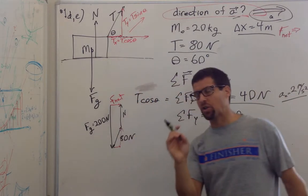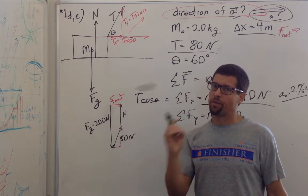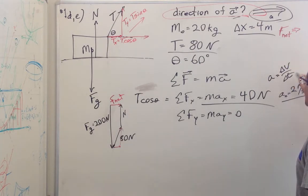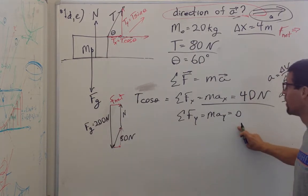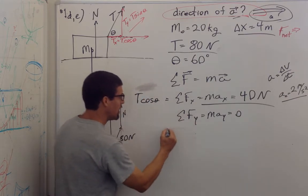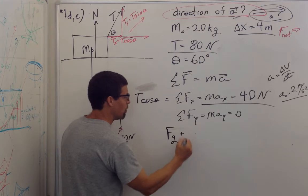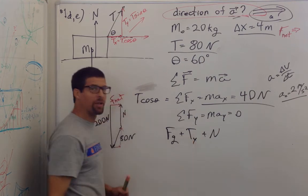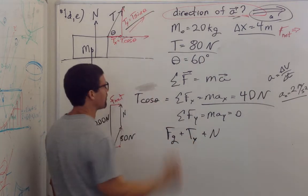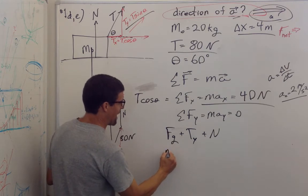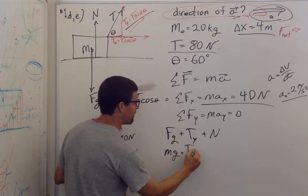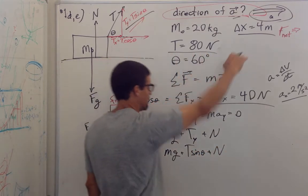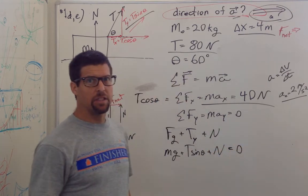We already knew that from part A, because it took 2 seconds to go from 0 to 4 meters per second, and acceleration is change in velocity over change in time. The acceleration in the y direction is equal to zero. We can write down all of our forces in the y direction: the force of gravity, the tension's y component, and the normal force. So we have mg plus tension sine theta plus the normal force equals zero.